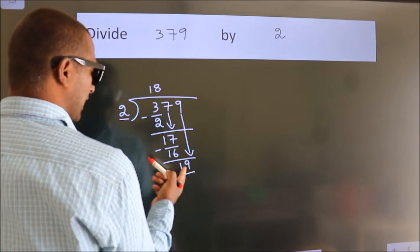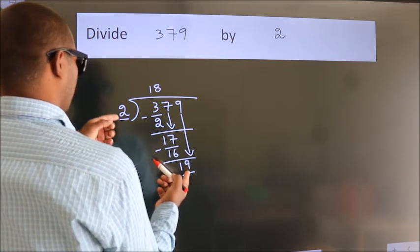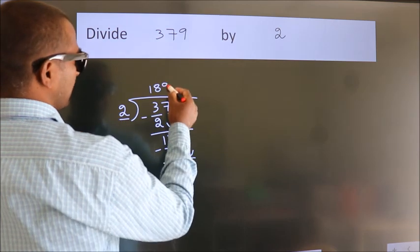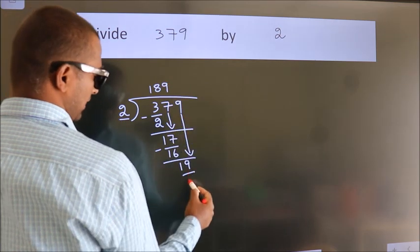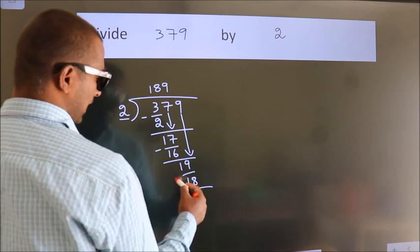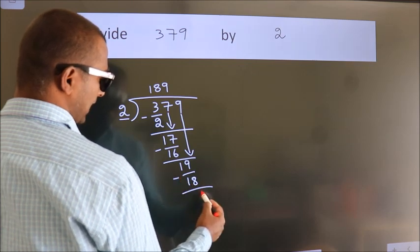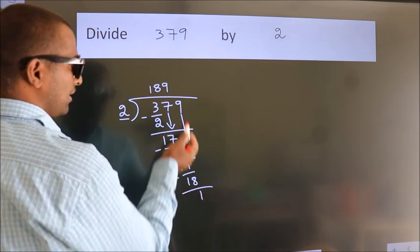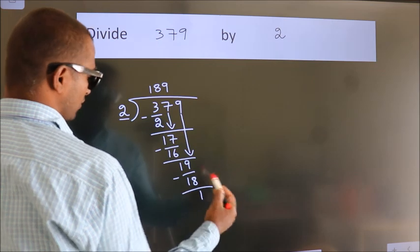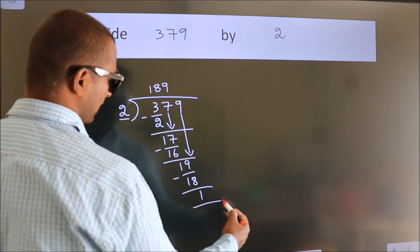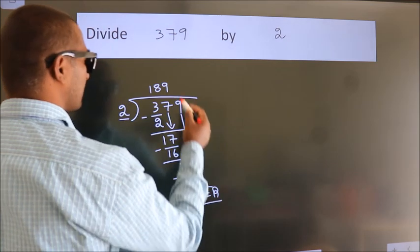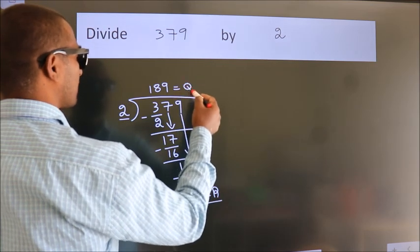A number close to 19 in the 2 times table is 2 nines, which is 18. Now we subtract, we get 1. There are no more numbers to bring down, so we stop here. This 1 is our remainder, and this is our quotient.